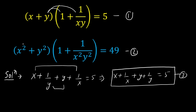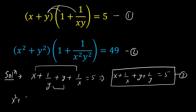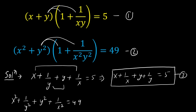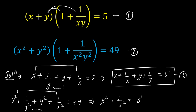Similarly, expanding equation 2: x² multiplied by 1 gives x², x² multiplied by 1/x²y² gives 1/y², y² multiplied by 1 gives y², and y² multiplied by 1/x²y² gives 1/x². So we get x² + 1/x² + y² + 1/y² = 49. Let us consider this equation 4.